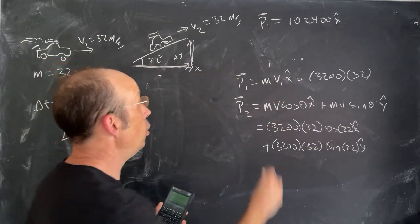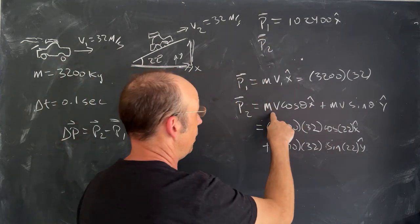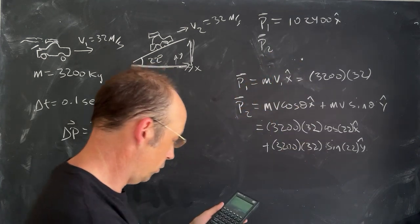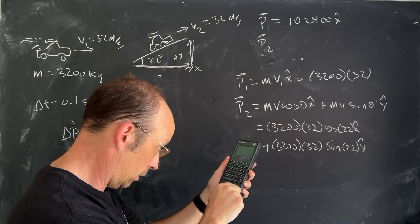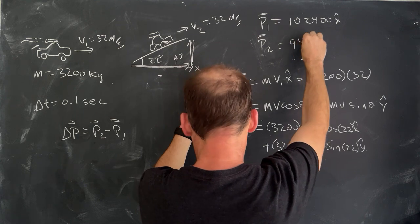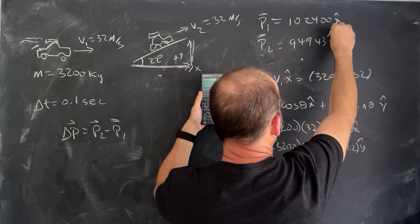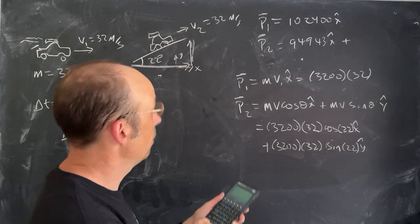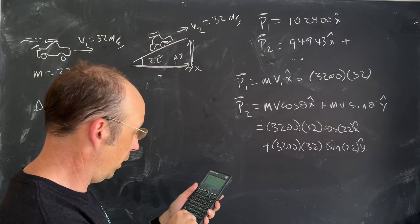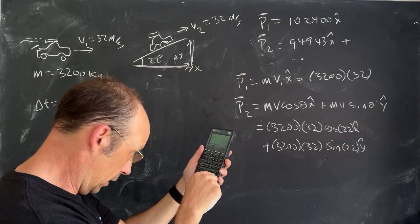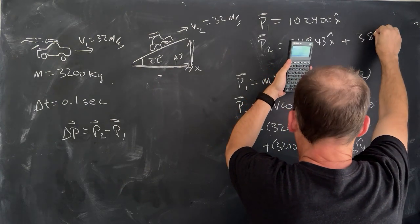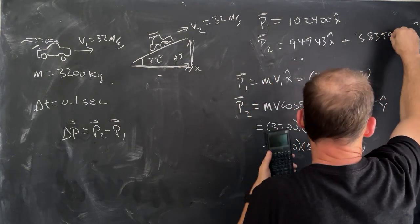Now, for P2, it's actually that same MV. I just need to multiply it by the cosine of 22. So, 22 cosine times. And the x component is equal to 94943 x-hat, plus, now I have to do the y component, 102400 enter 22 sine times. And I get 38359 y-hat.